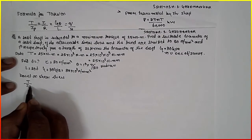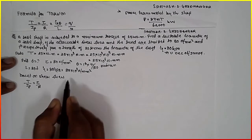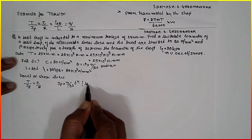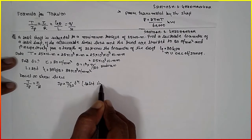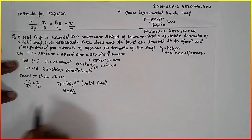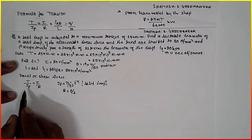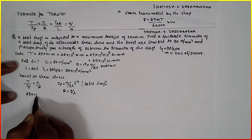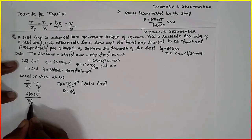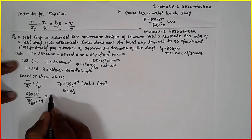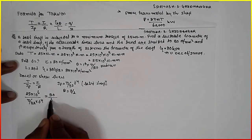That is T divided by Jp equals tau by R, where Jp for solid shaft is nothing but pi by 32 into D raised to 4, and R is nothing but D by 2. Substitute here to get the dimension D. The T value is given as 25 into 10 raised to 6, divided by pi by 32 into D raised to 4. Tau value is 80 divided by D by 2.